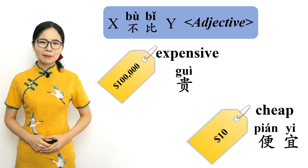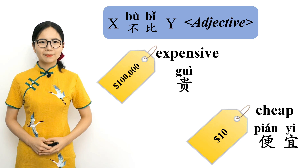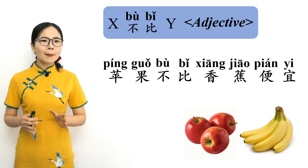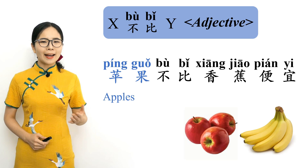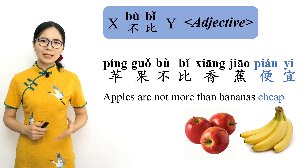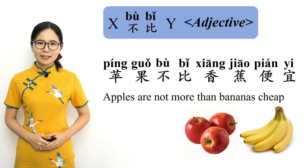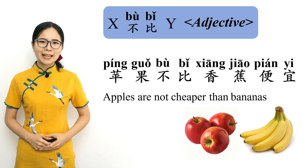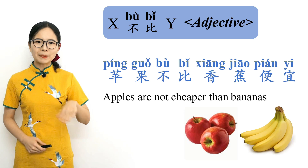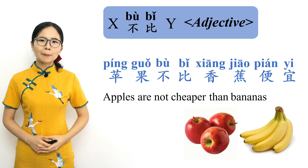The opposite of expensive 贵 is 便宜, meaning cheap. Please repeat after me. 便宜 — cheap. Apples are not cheaper than bananas: 苹果不比香蕉便宜. 苹果 means 'apples,' 不比 means 'are not more than,' 香蕉 means 'bananas,' and 便宜 is an adjective meaning 'cheap.' Apples are not cheaper than bananas. Please repeat after me. 苹果不比香蕉便宜. Apples are not cheaper than bananas.